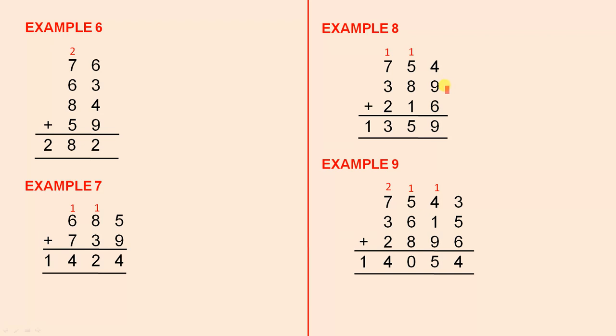Example 8, 9 plus 6 is 15, plus 4 is 19, 9 ones and 1 ten. 8 plus 1 is 9, plus 5 is 14, plus 1 is 15, 5 tens and 100. 3 plus 2 is 5, plus 7 is 12, plus 1 is 13. Put down the 3 and there's your 1, so it's 1,359.